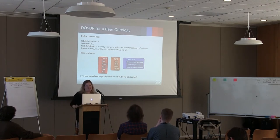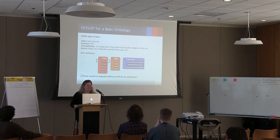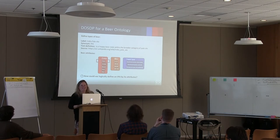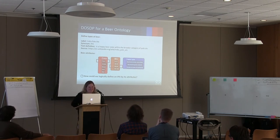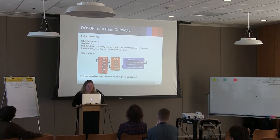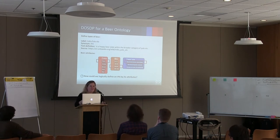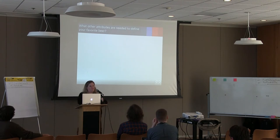I want to ask you, the audience, how would you logically define an IPA? Picking one term from each of the listed attributes: an IPA has a pale color, and IPAs are hoppy with a bitterness around 60 to 80 IBU — maybe a double IPA is 80 to 100. And we would also specify what type of yeast is used, perhaps Saccharomyces cerevisiae. In our logical definition, we would use these ontology terms to build a logical definition. The table editor will let you pick from a list of these terms to easily build a logical definition without knowing the OWL language.